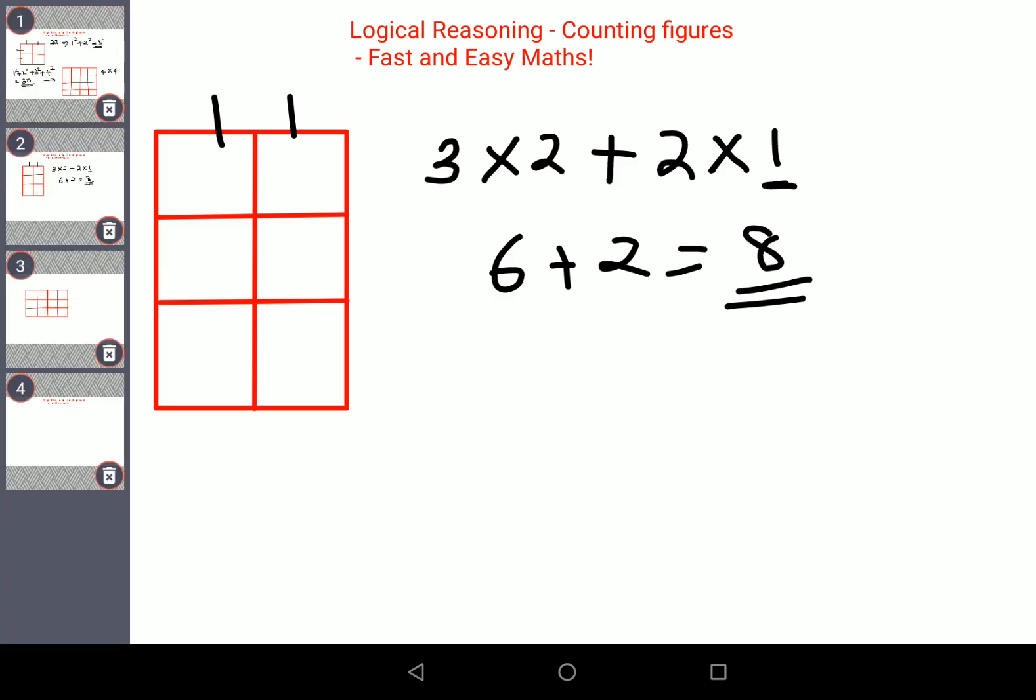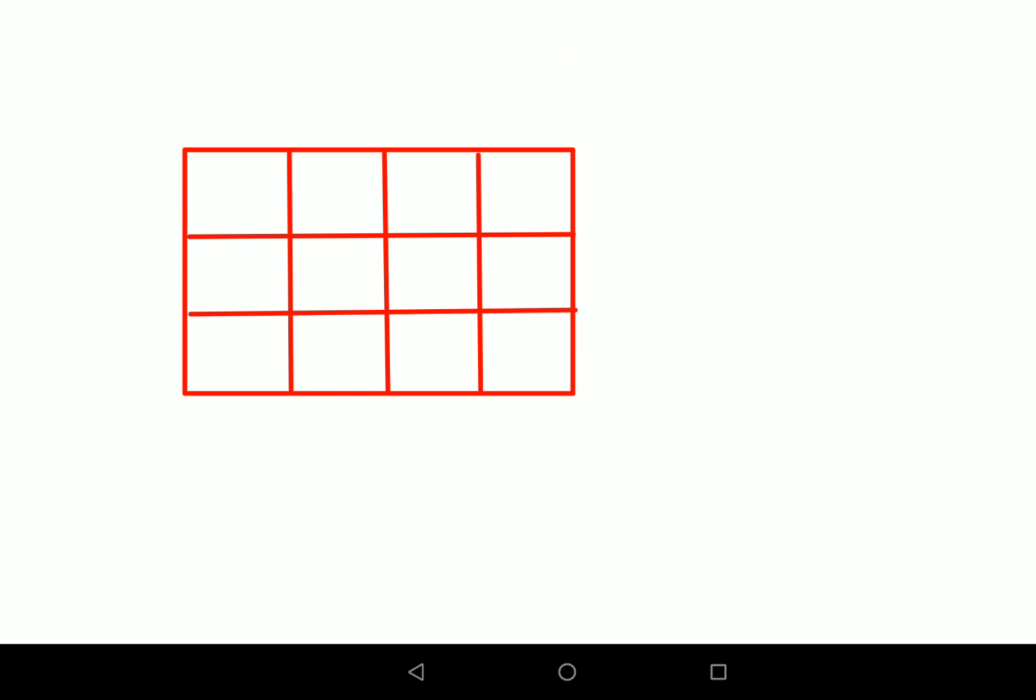Now let's look at a bigger one. Here if you see there are 1, 2, 3, 4. So 4 into 3 plus 3 into 2 plus 2 into 1. This is 12 plus 6, gets you 18. 18 plus 2 gets you 20. So 20 are the total number of squares in the given figure.